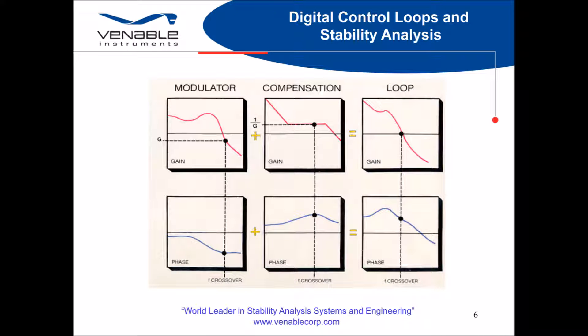When we talk about a digital loop control application, we still have the same breakdown of stages as we do in the analog world. First is the modulator that will exist in the analog power stage with its gain at our chosen crossover frequency. Then we have the compensation stage that exists in the digital portion of our system with coefficients chosen to provide us with the inverse gain at the crossover frequency. These two stages summed together give the total loop response of the system with the required phase margin at the point where the gain is unity. This is essentially the same as the analog control loop.